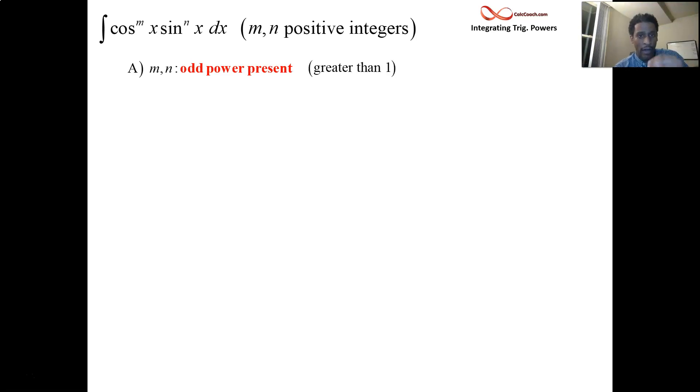We'll deal with when we have a power of one later on down the line, but first thing I want you to look for is if there is an odd power present on one of them, on both of them, just any kind of odd power. I have m as the exponent on cosine, I have n as the exponent on sine, but either one of them or both of them somehow involving an odd number greater than one, so three or above.